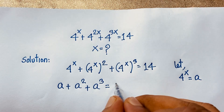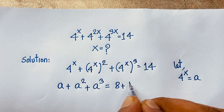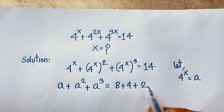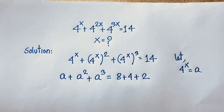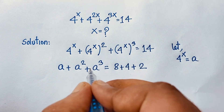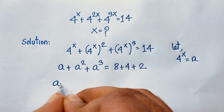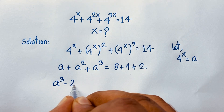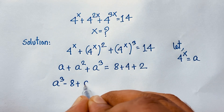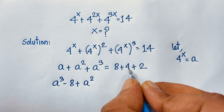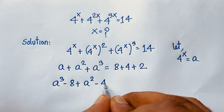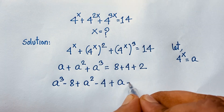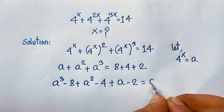Notice that 14 can be written as 8 plus 4 plus 2. So we rearrange: a cubed minus 8 plus a squared minus 4 plus a minus 2 is equal to 0.